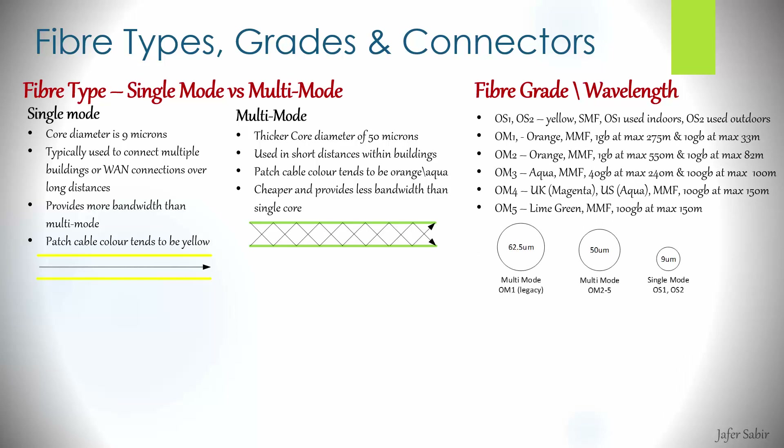Looking at the top line, we've got OS1 and OS2, which are typically yellow in color and are single mode fibers with a core of 9 microns. The difference between OS1 and OS2 is that OS1 is a tight buffered construction typically used indoors, whereas OS2 is a loose tube cable construction mainly used outdoors. OS2 has much less attenuation than OS1 and supports much higher distances.